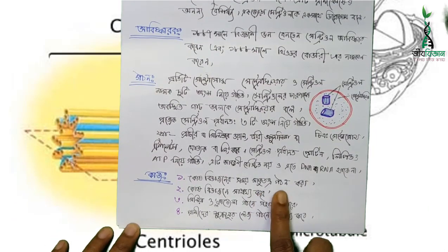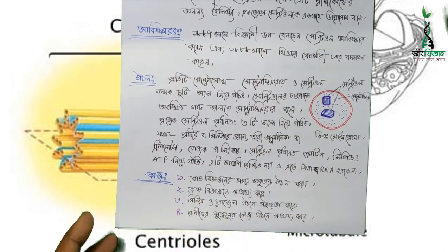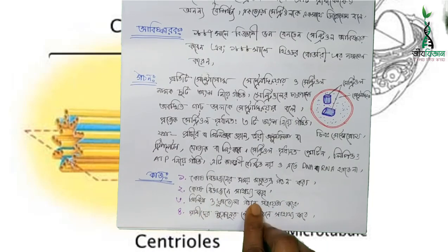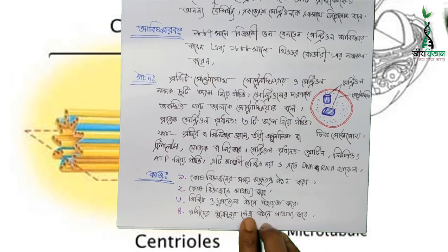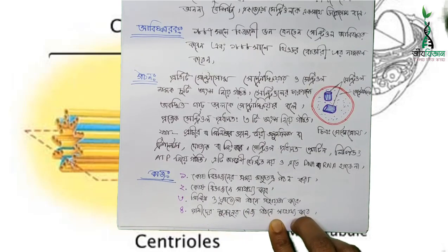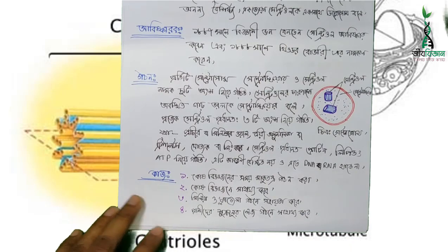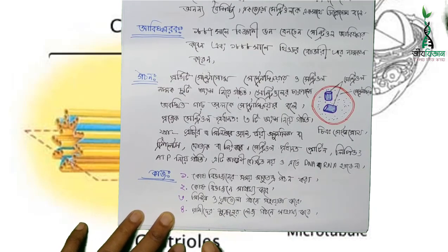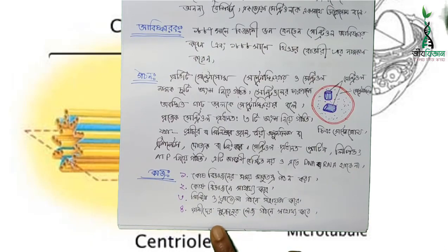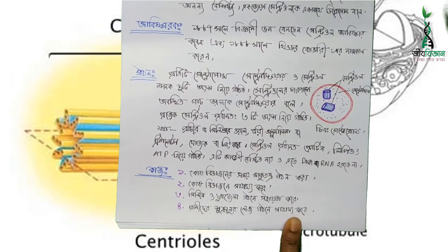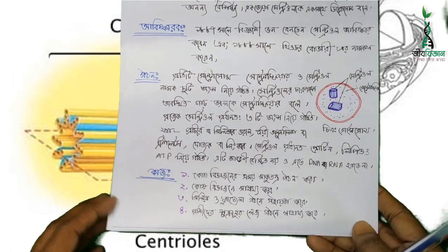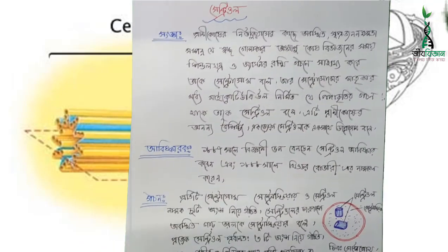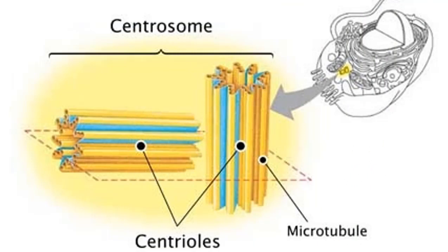মাকু তোন্তো তোরি কোশ বিভাজনে স্পিন্ডল জন্তে বাংলা হচে। মাকু তোন্তো তোরি কোরে ক্রোমোজোমকে ডাবল হতে দিগুন হোতে সাজ করে। কেটে অজাজ খেরুল নমি কাহদুন কোহে করঙ্গে খেচে খেবে নমিন কোষের কোরলেশব করেচে।